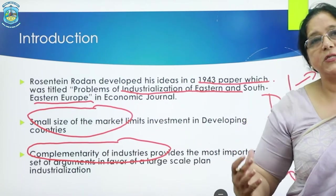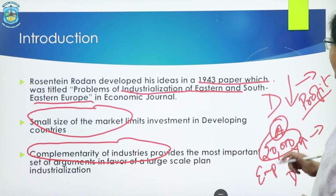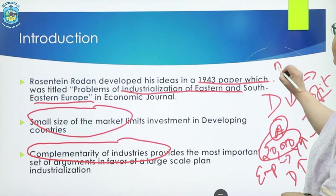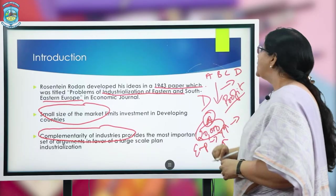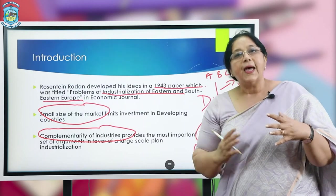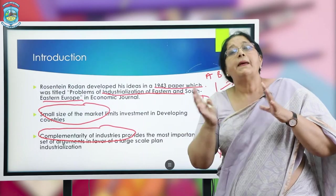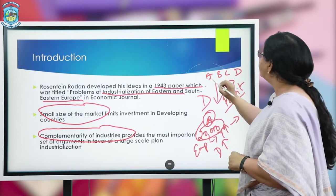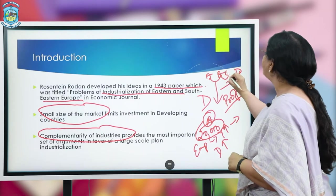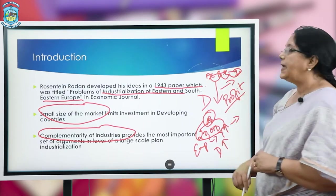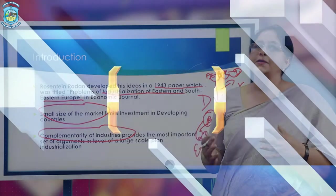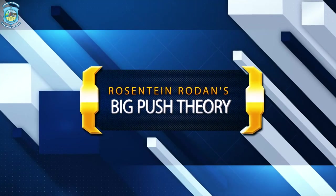If we imagine a situation where simultaneous investment is made in a number of industries A, B, C, D — because of interdependence and complementarity of these industries, A will demand products of B, C, D, and similarly B will demand products of A, D, and so on. This will lead to widening of the size of the market.